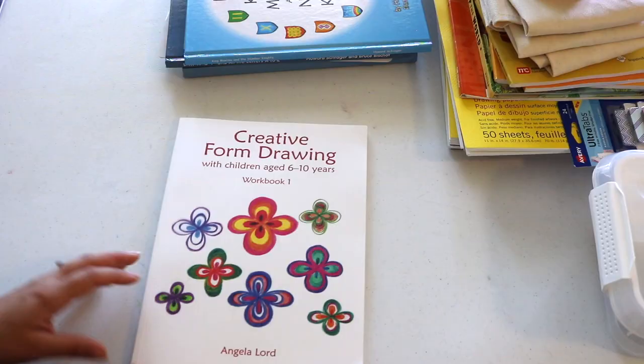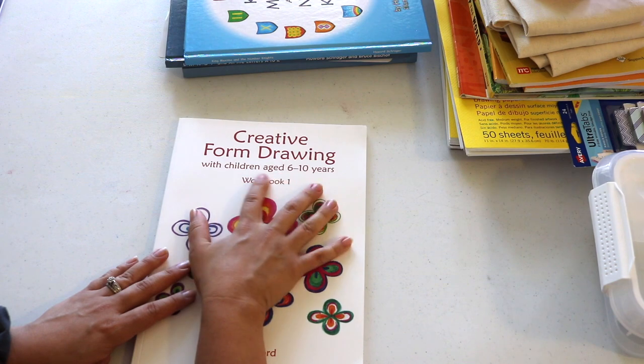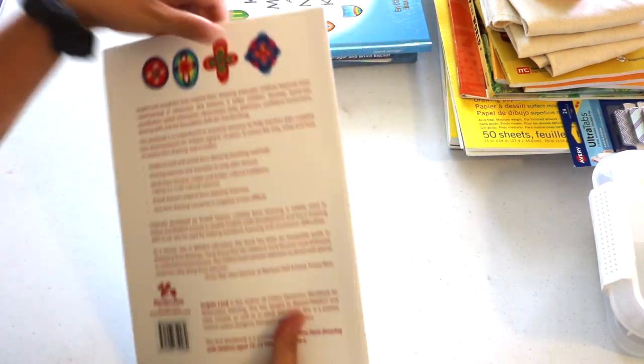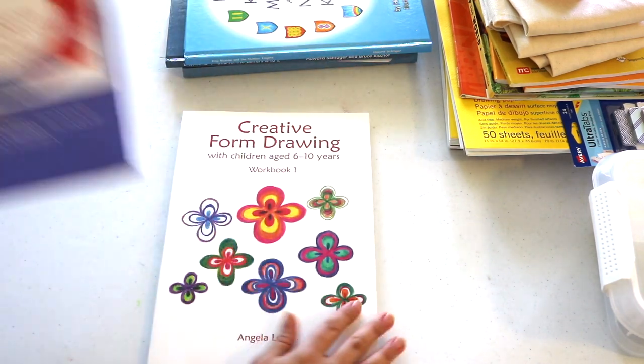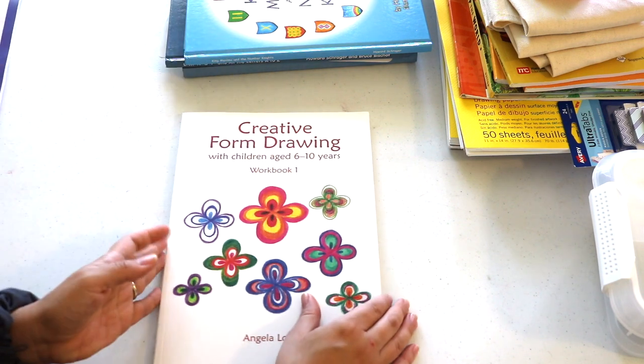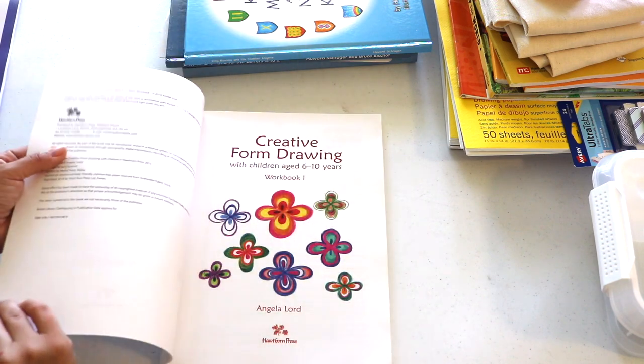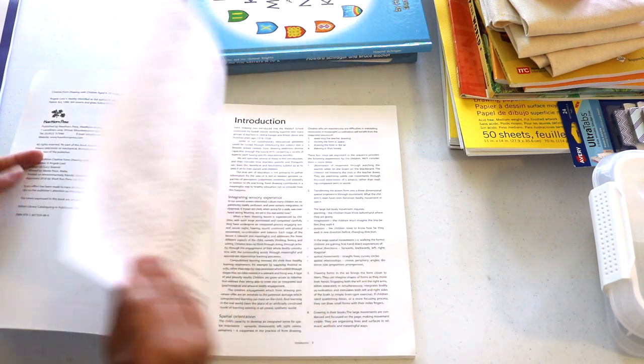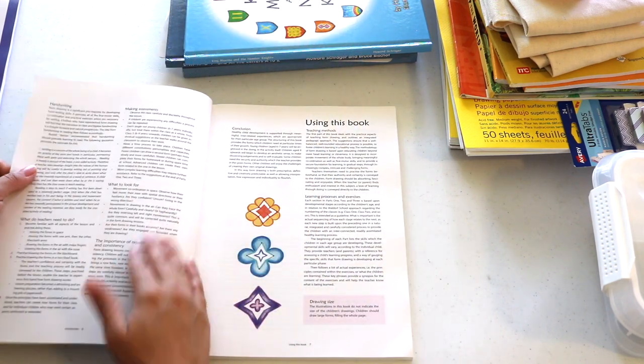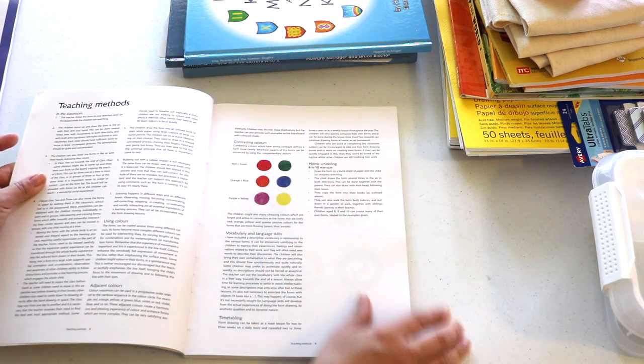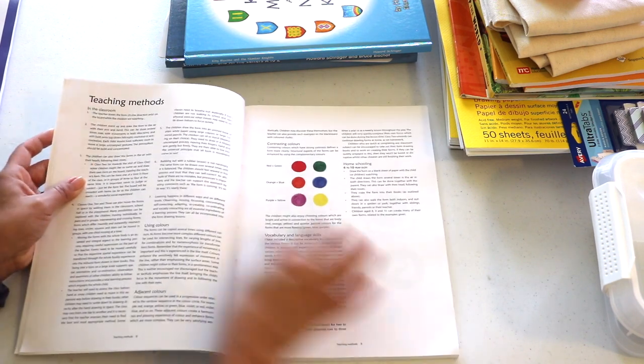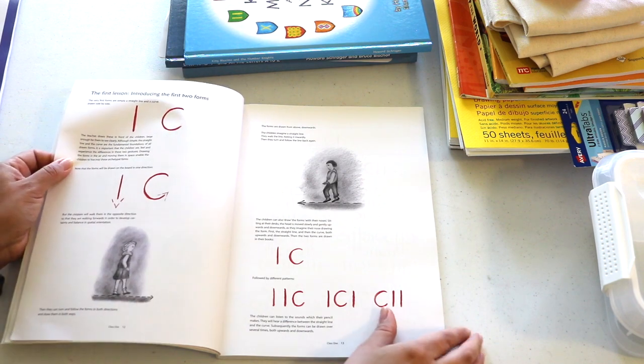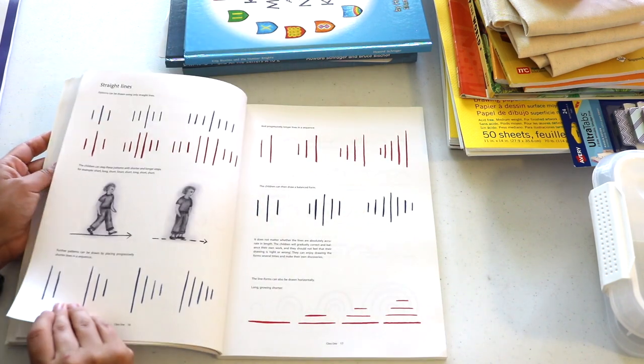Following Coloring with Block Crayons, we'll get right into Creative Form Drawing by Angela Lord. This is workbook number one, ages six to ten years old, and there is a workbook number two for ages 10 and up, and I will also be purchasing that soon. Just like Coloring with Block Crayons, this says it's a workbook, but you're not drawing directly in the book. So in my opinion, just like Coloring with Block Crayons, it's more of a teacher's manual or maybe even like a textbook in that it is guided and broken down by lessons. We will work out of the book with it out in front of us, but it is not a word for word guide, again just more like a teacher's handbook or a manual in teaching methods and notes on observing the child.